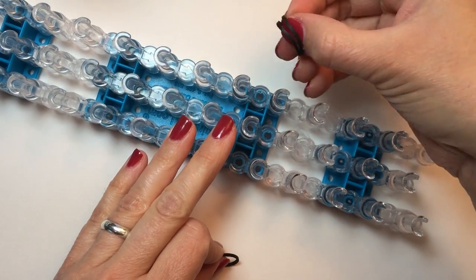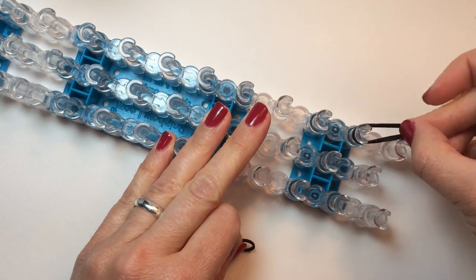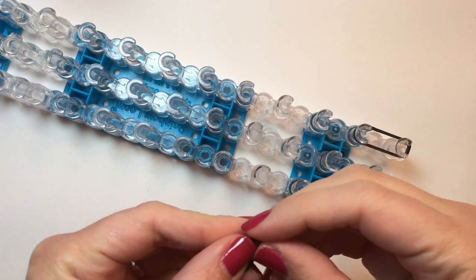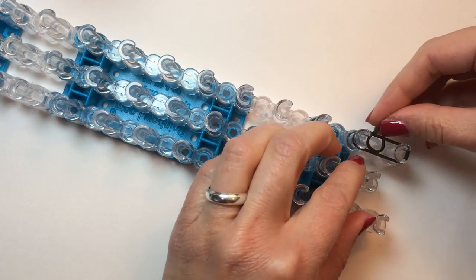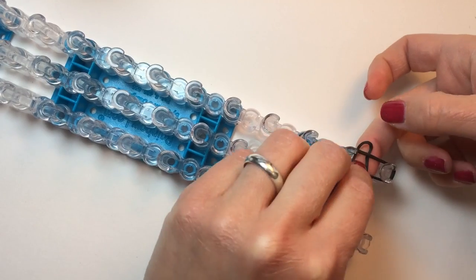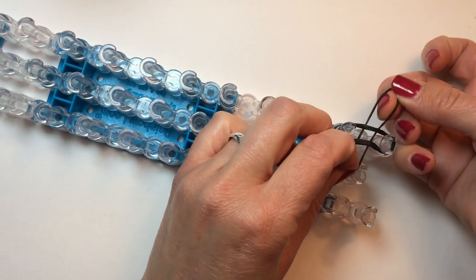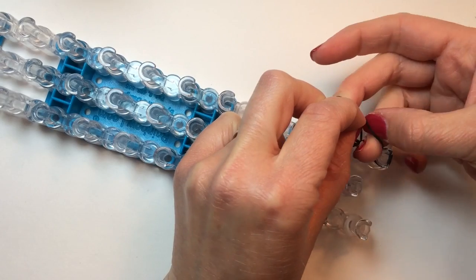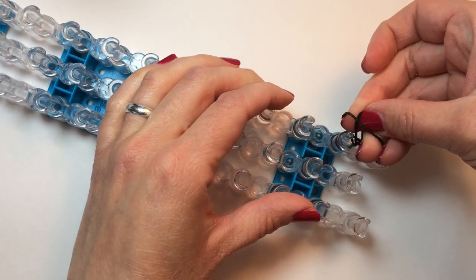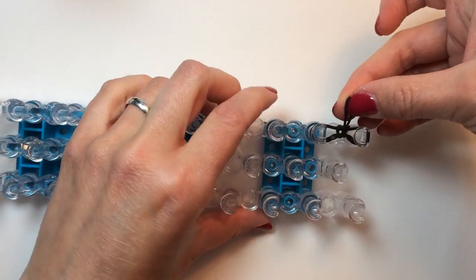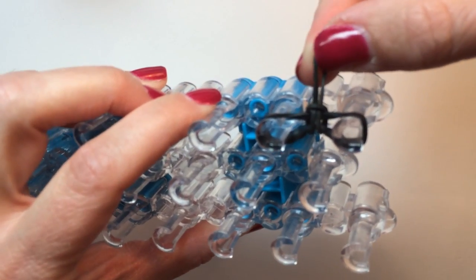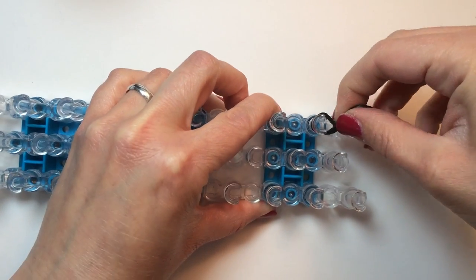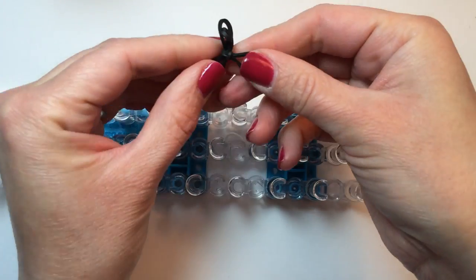To create the bow tie, take two rubber bands and place them across any two pegs. Take another single black rubber band, place it underneath, and then hold both sides of that band. Open one side up wide and pull the other side of that same band in the middle so that it creates a slip knot. Pull it tight, and then you can pop that off the loom to use as your bow tie.